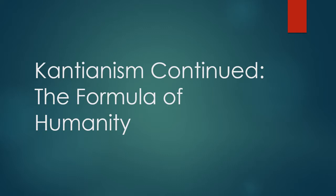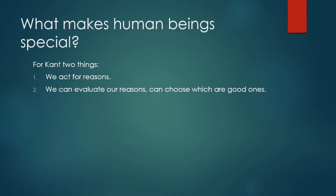So what's the formula of humanity? Well, before we can understand it, we ought to ask ourselves what makes human beings special. We think that we're different from animals — I like my dog, I like cats, but I think human beings are more important than animals. I think we deserve respect in a way that they don't. So how are we special? How are we different from animals? Kant says there are two things: we act for reasons, and we can evaluate our reasons — we can choose what reasons are good ones and choose what reasons we act on.